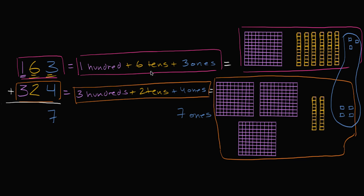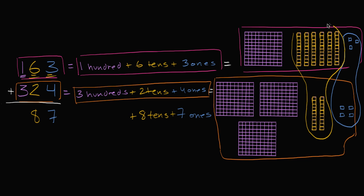Now, if I have six tens and two tens, well if I add them together, I'm going to have eight tens. If I have six tens and two tens — the six and this two are in the tens place — so this represents six tens, this represents two tens. Six tens plus two tens is eight tens. And we also see it here: six tens plus two tens is eight tens.